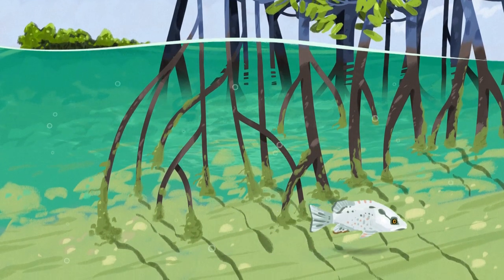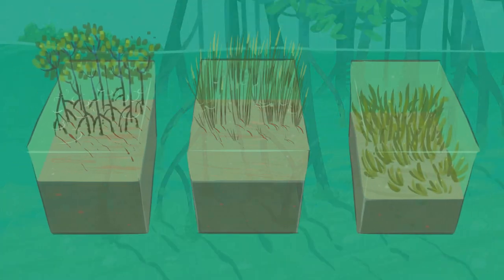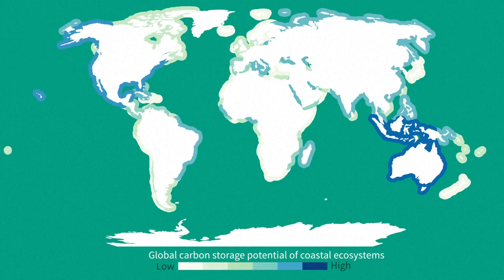Ecosystems known as blue carbon can be found along the coastal regions and include mangroves, salt marshes, and seagrasses, such as the Posidonia seagrass meadows in the Mediterranean. In total, they cover 50 million hectares of the planet.